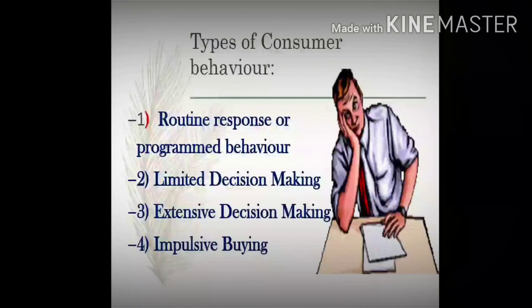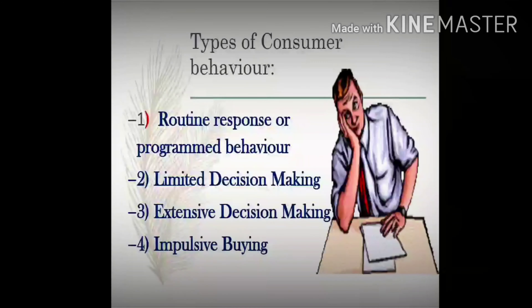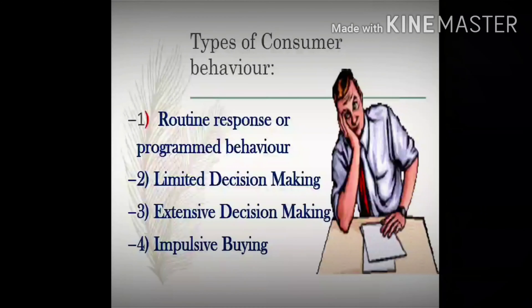The second type is limited decision making — the behavior of a consumer for products that are used daily but not purchased on a daily basis. For example, clothes. A consumer may buy clothes after one month, two months, or three months. In India, most consumers buy clothes after every three or six months. So their behavior while buying clothes is a little different from buying a toothbrush. This is called limited decision making.